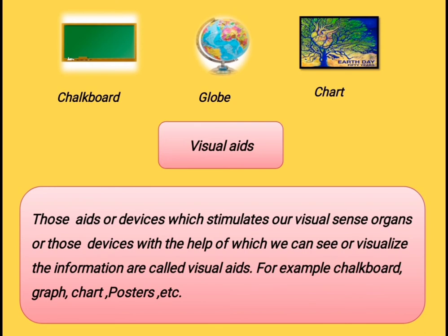In your classroom, you must have seen your teachers using chart, chalkboard, globe, etc. But why do your teachers use these aids in the classroom? Your teacher uses these aids for the visual presentation of various types of information. Therefore, visual devices are those devices which stimulate our visual sense organs so that we can visualize the information very clearly present before us. For example, chalkboard, globe, chart, etc.